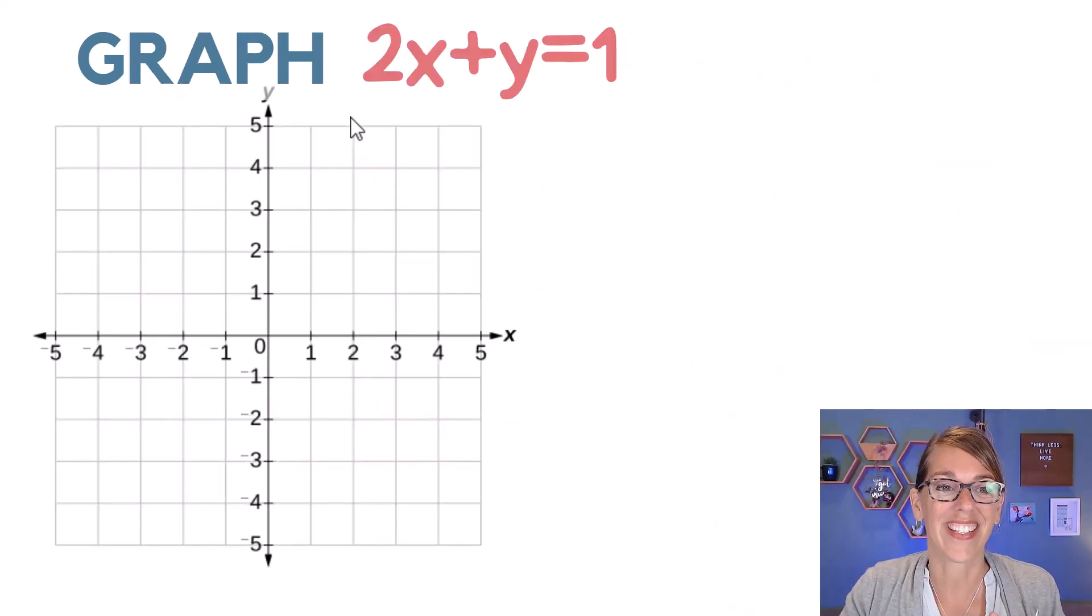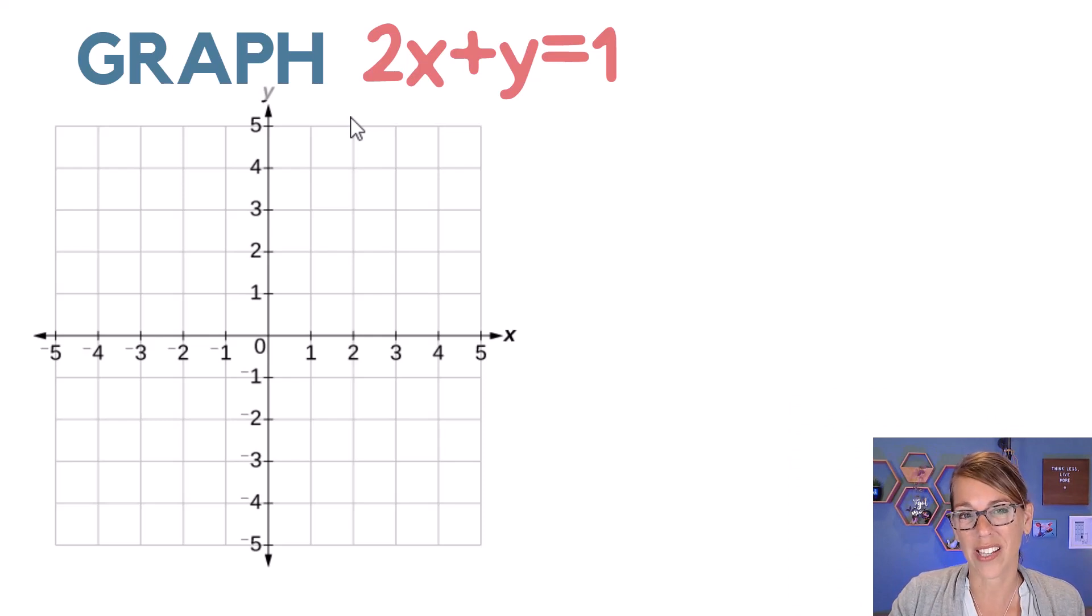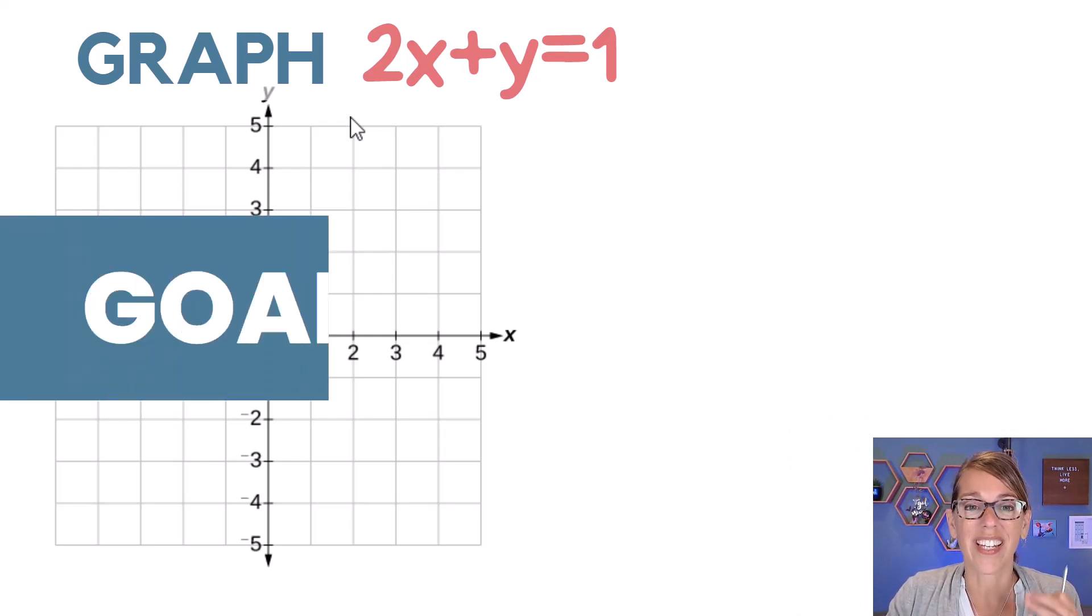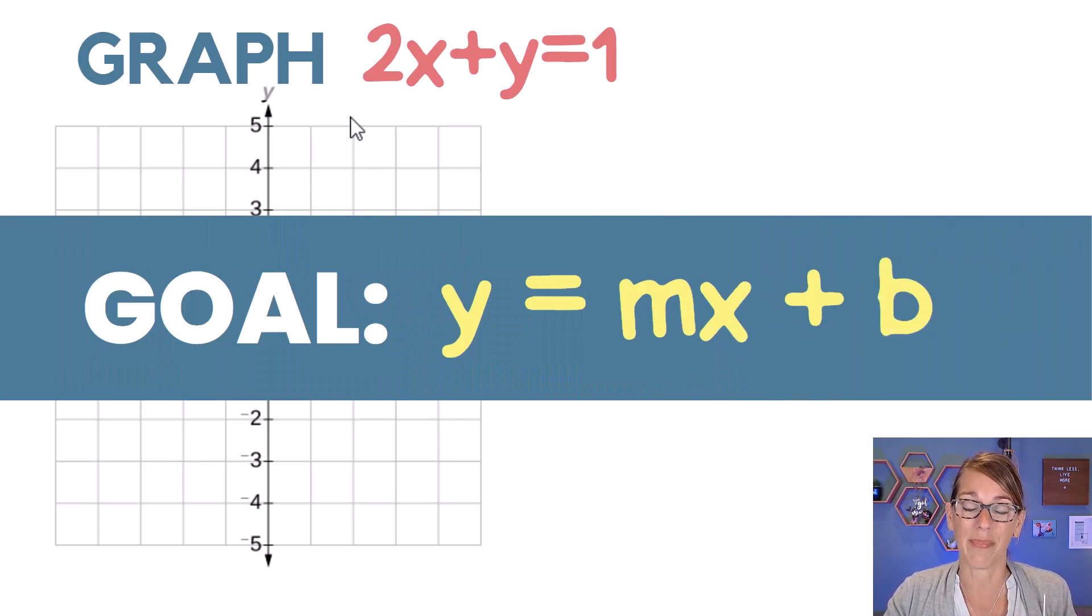I'm Angie, let's start with this example. I want to graph 2x plus y equals 1. The easiest way to do this is to get it into y equals mx plus b. If you haven't seen my video on graphing in slope intercept form, take a look at the description below for that link.